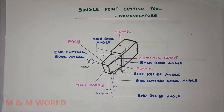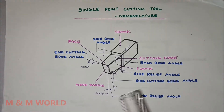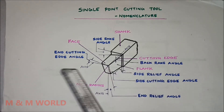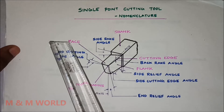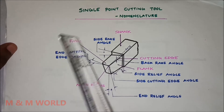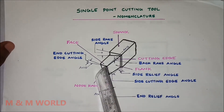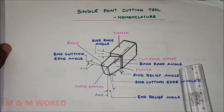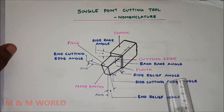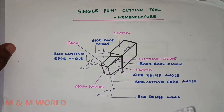Hello everyone, let us look at various tool elements and tool angles in a single point cutting tool. We have discussed earlier various tool elements: face, shank, cutting edge, flank, nose, then angles like side rake angle, back rake angle, side relief angle, side cutting angle, end relief angle, and end cutting edge angle.